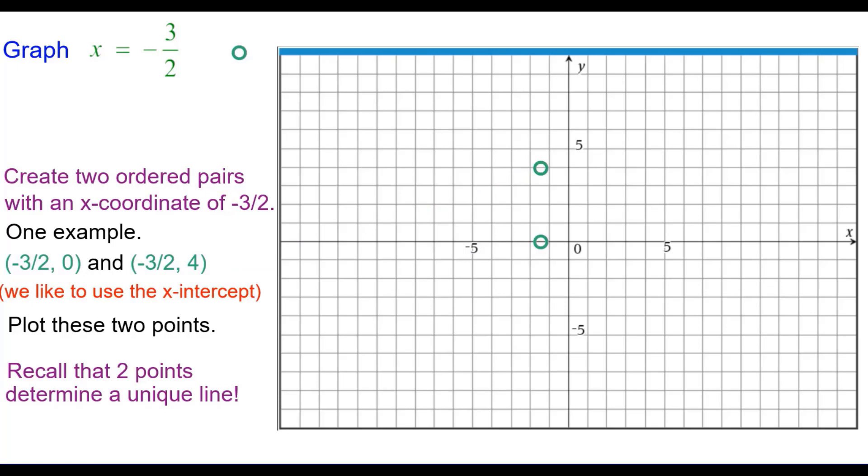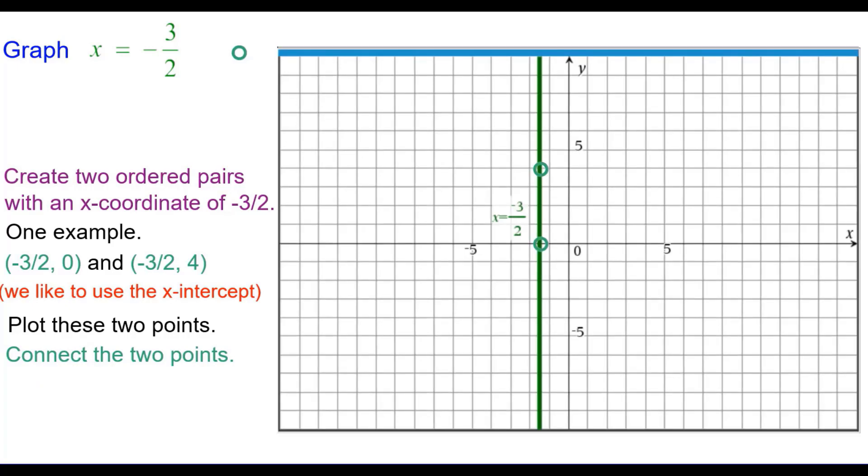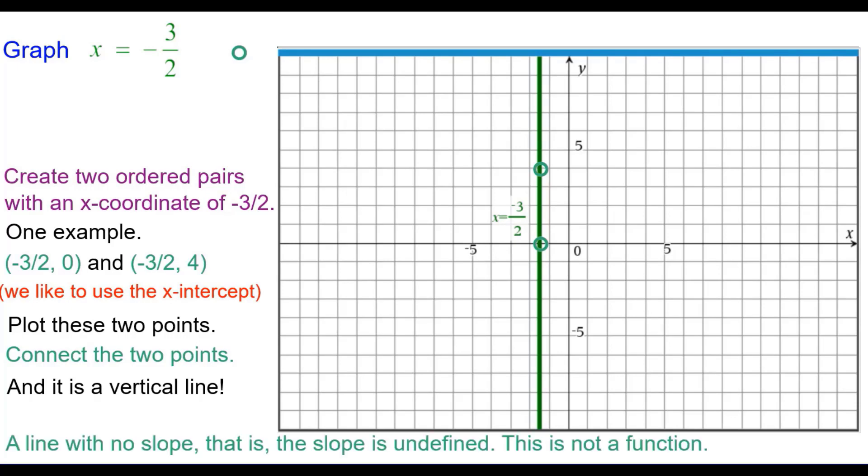Recall that two points determine a unique line. The graph of x equals constant is a line. Connecting those points, and it is a vertical line. It has no slope, or the slope is undefined, and it's not a function.